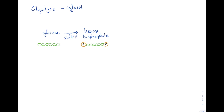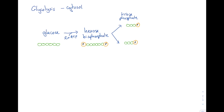The addition of these phosphate groups makes the molecule unstable, and so we undergo lysis — which means breaking down — and this creates two three-carbon molecules each known as triose phosphate. These molecules undergo another round of phosphorylation, this time using inorganic phosphate which is available in the cytosol, to create triose bisphosphate.